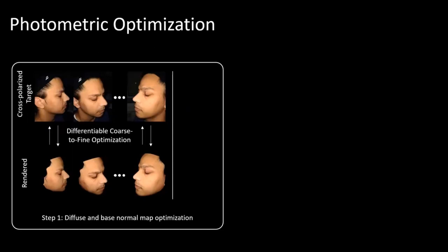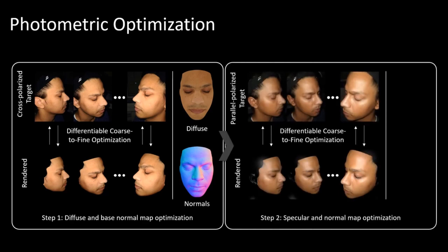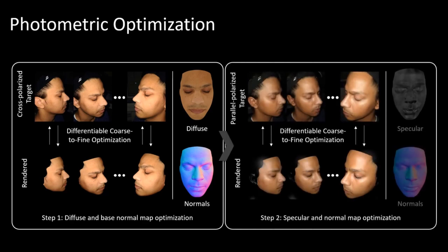Specifically, we propose a two-step photometric optimization. Using the cross-polarized data, we recover the diffuse and an initial normal map of the subject using a coarse-define optimization procedure. We then recover the specular map and refine the normal map using the parallel-polarized images.